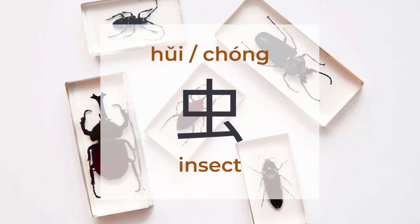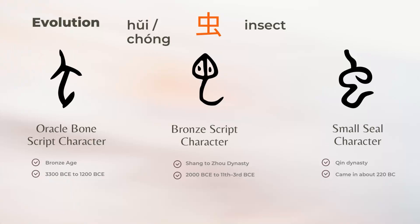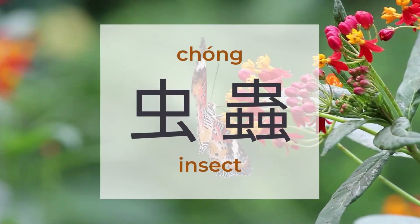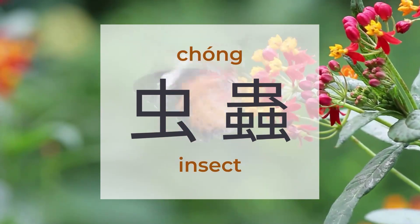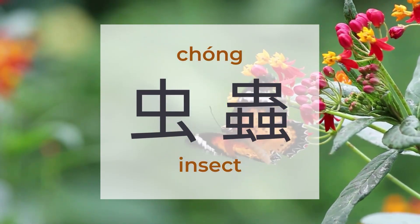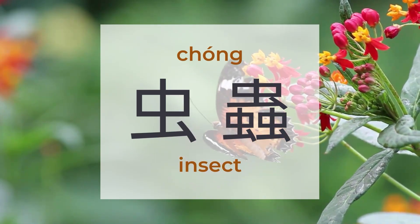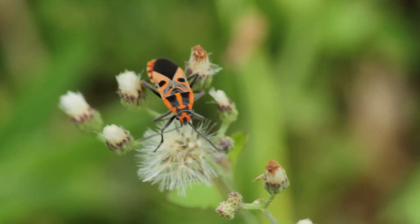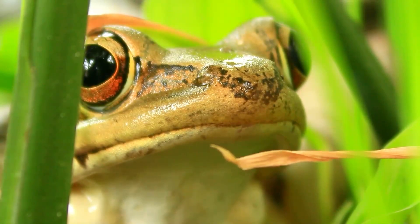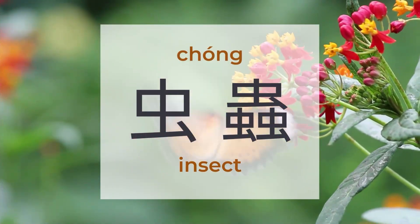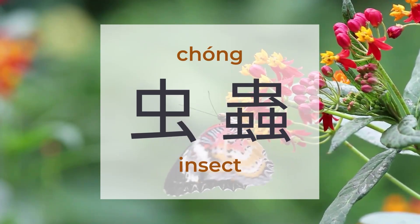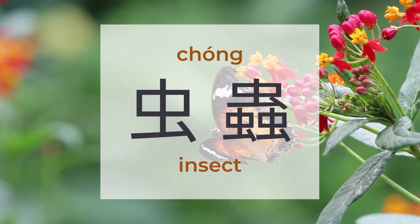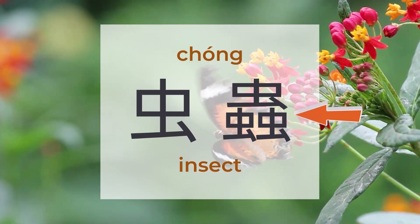虫 (huǐ or chóng) means insect. There are around 1,067 characters to be found under 虫. 虫 is a pictogram. You can find 虫 in characters related to insects, worms, bugs, snakes, and frogs. There is one form in 虫, and it often shows on the left side of characters. Mostly we don't use 虫 alone; when we indicate insects, we use the three-insect form 虫.